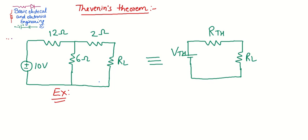The next revision topic is Thevenin's Theorem, in which we can convert a given circuit into Thevenin's equivalent form consisting of Thevenin's voltage, Thevenin's resistance RTH, and the load resistance. Here we can see one simple example with a circuit consisting of a 10 volt source, three different resistances, and one load resistance.